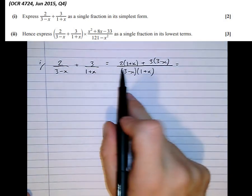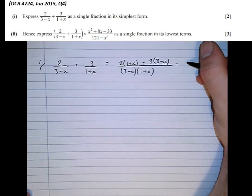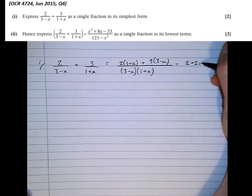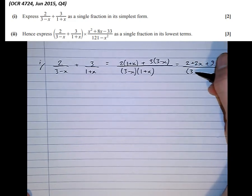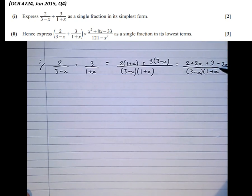Equals, okay, multiplying out the brackets on the top. 2 plus 2x plus 9 minus 3x over... And if something's fully factorised, we should never multiply it out. That's usually a waste of time. So we'll leave that on the bottom there, as it is.